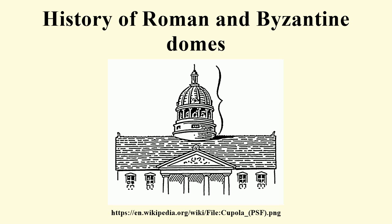Rounded arches, vaults, and domes distinguish Roman architecture from that of ancient Greece and were facilitated by the use of concrete and brick. By varying the weight of the aggregate material in the concrete, the weight of the concrete could be altered, allowing lighter layers to be laid at the top of concrete domes. But concrete domes also required expensive wooden formwork, also called shuttering, to be built and kept in place during the curing process, which would usually have to be destroyed to be removed. Formwork for brick domes need not be kept in place as long and could be more easily reused.